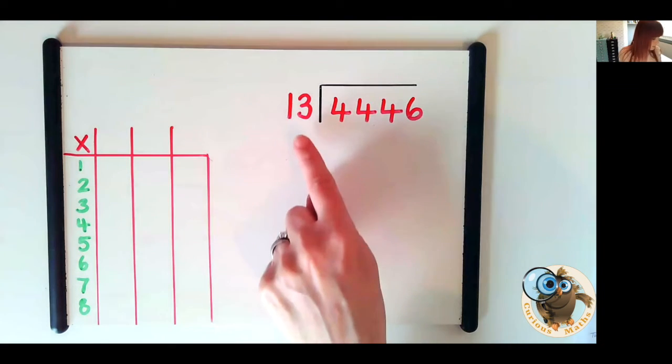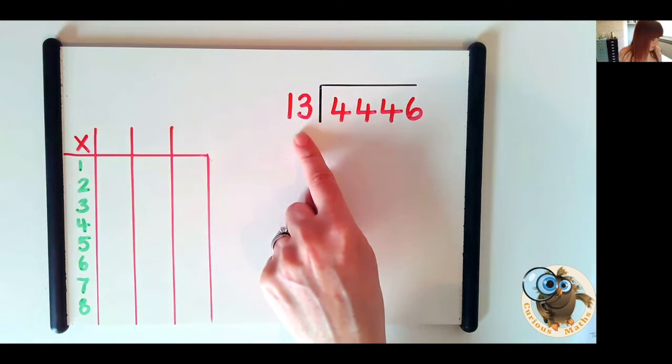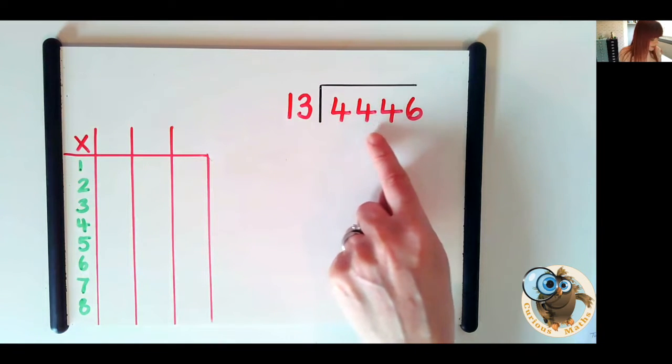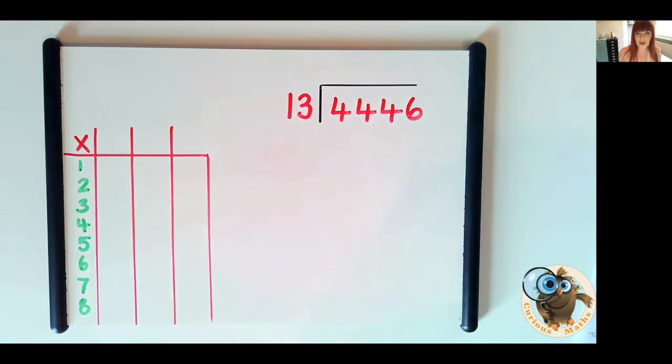So I'm dividing by 13, my divisor is 13, my dividend is 4,446. Now just like I demonstrated with the short division method, we're going to use the partitioning method to work out lots of 13. We're going to do that first so that when we actually get to dividing we can really concentrate on what we're doing with the new method rather than stopping and calculating as we go along. It's a really good thing to do first.